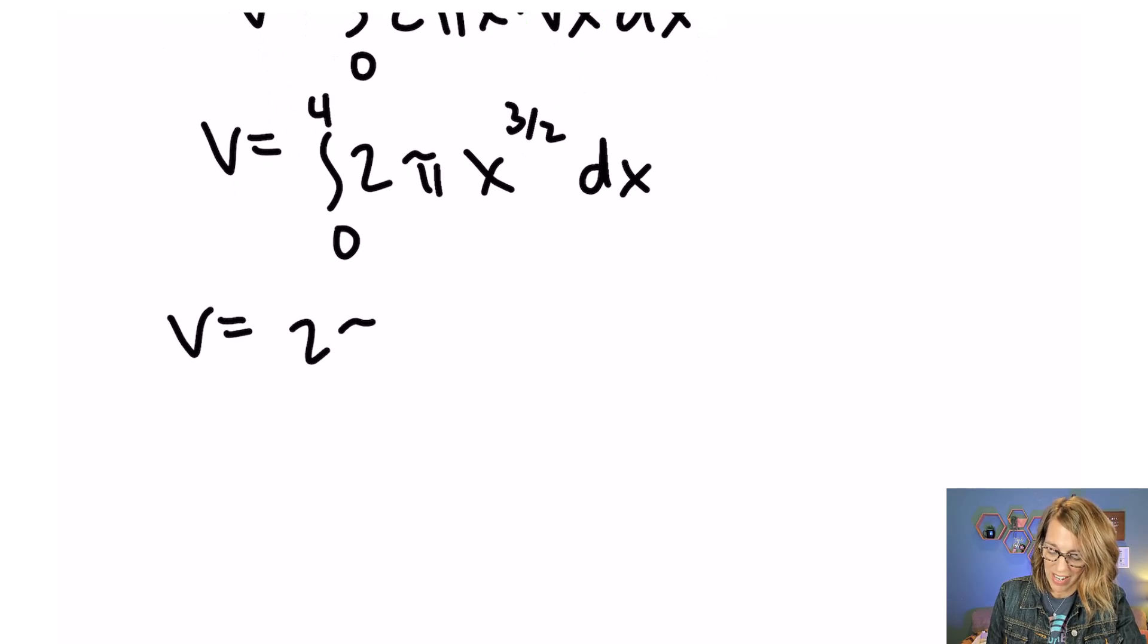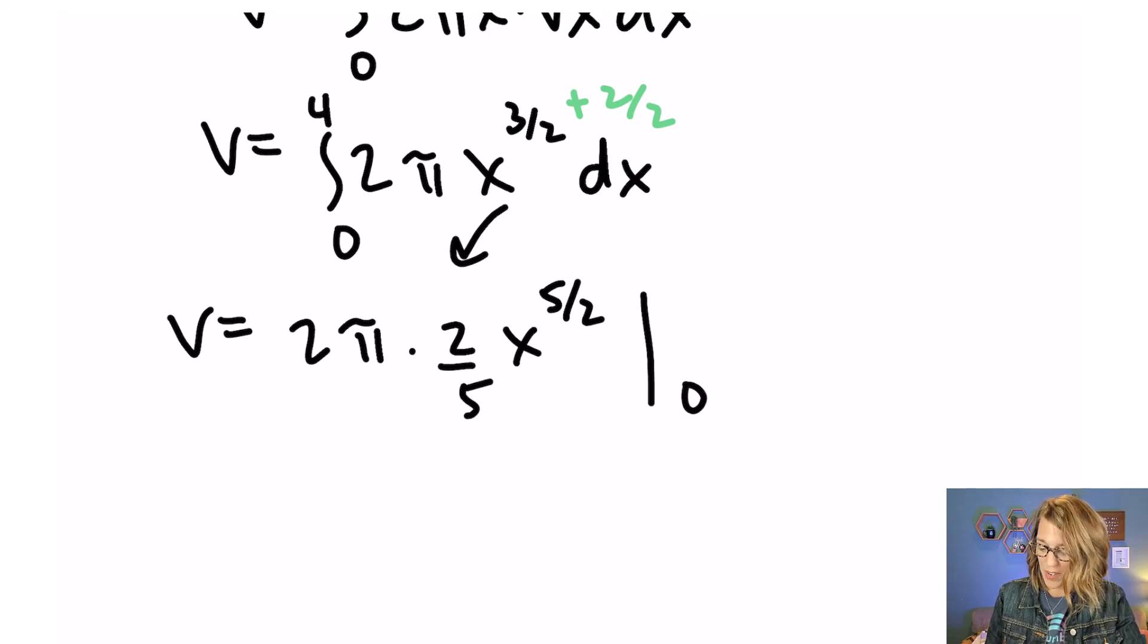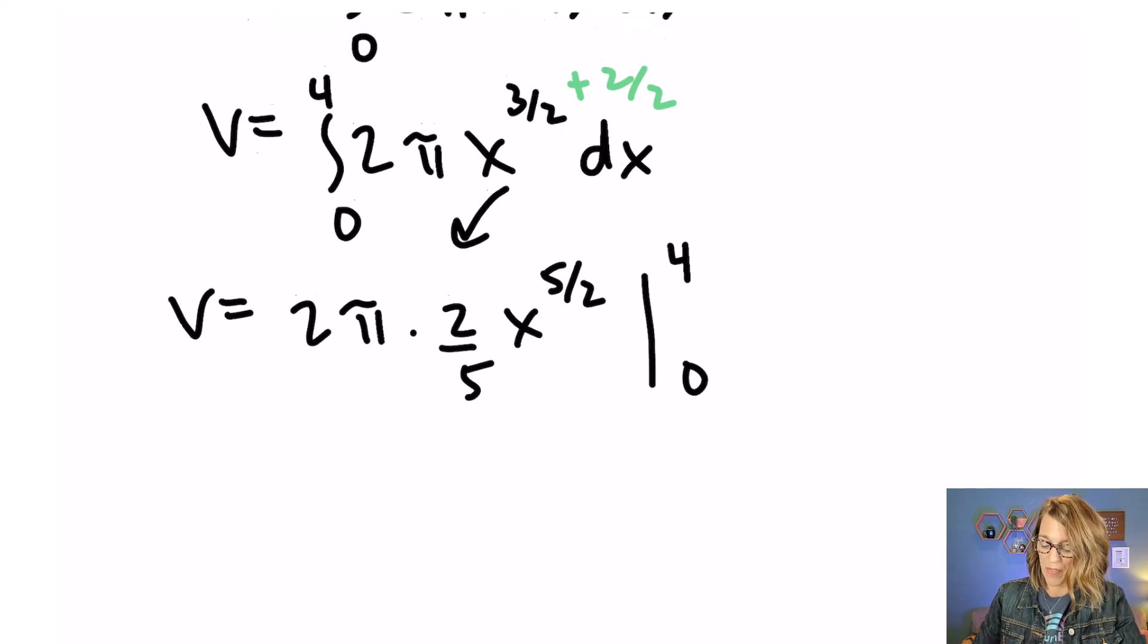My volume is, I can get that 2π and then the anti-derivative of x^(3/2). I need to add 2/2 to that and that's going to make that one 5/2. So I've got x^(5/2) with its reciprocal 2/5 out in front. And I'm evaluating that from 0 to 4.